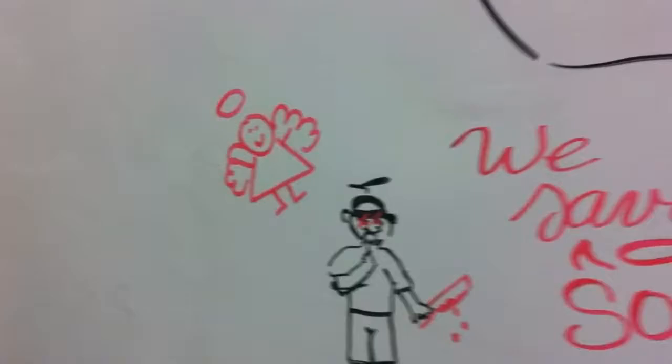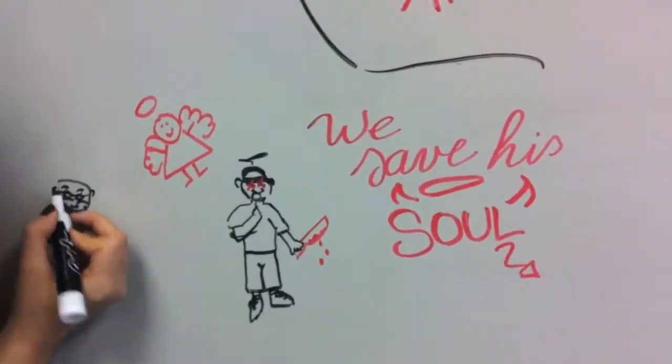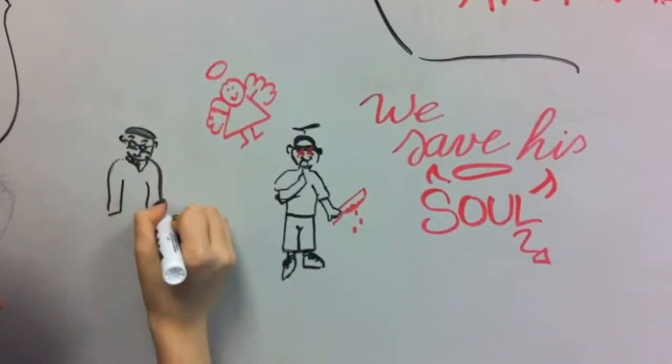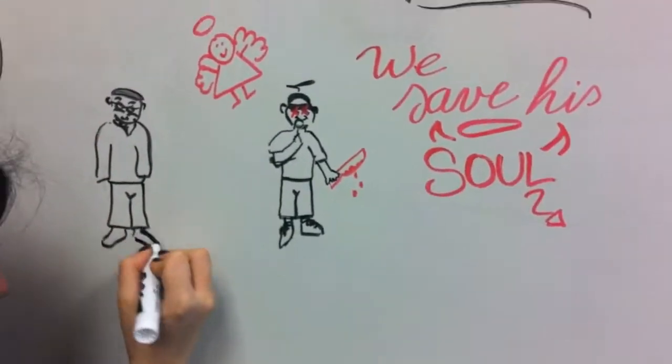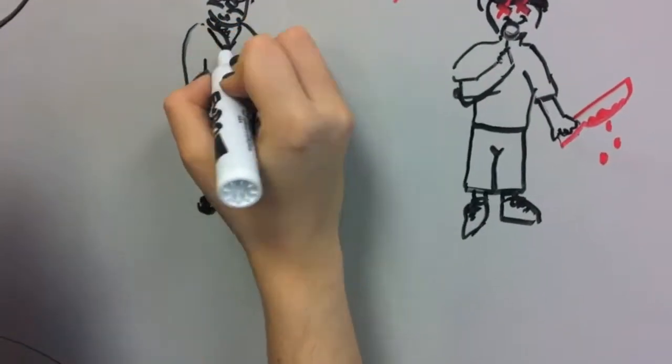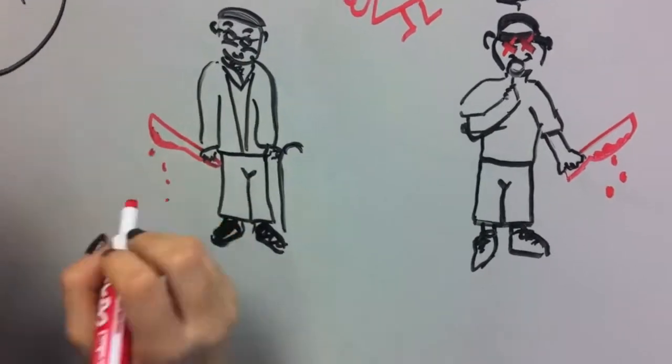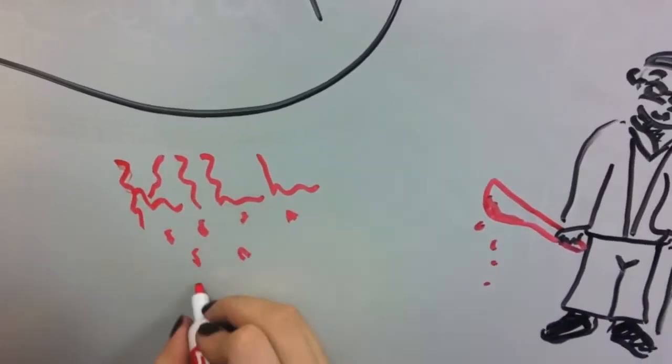Rav Huna says that a chaser doesn't need a warning, whether he is old or young. Because if you can kill a young chaser, who can't accept a warning, you don't need to warn anyone who is chasing. You can just kill them.